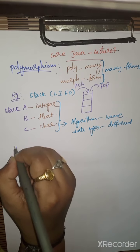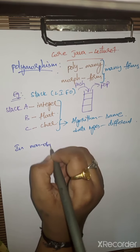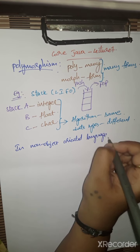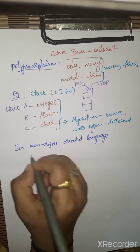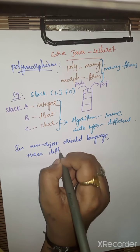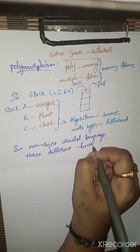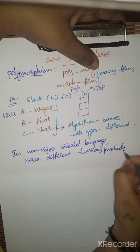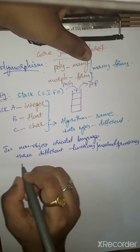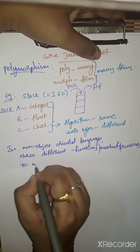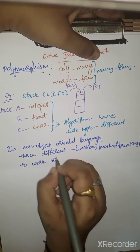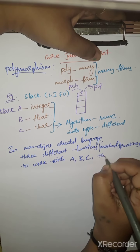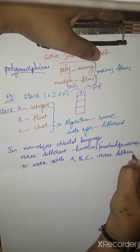In the case of non-object oriented languages, we need to write three different functions - you can call them methods or routines - to work with these three stacks A, B, and C by giving three different names.